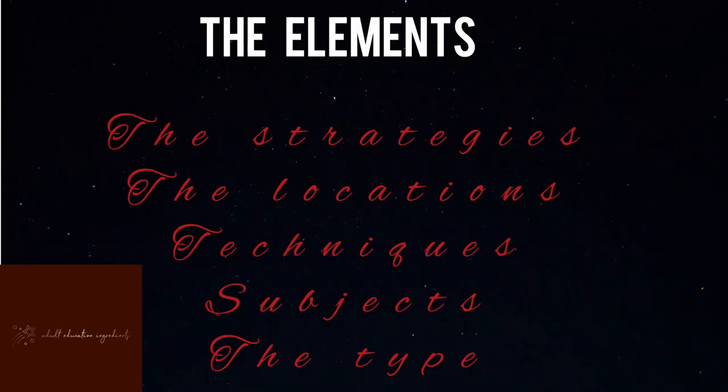The elements include strategies, location, techniques, subjects, and the type. Here, the type means the type of adult education or the characteristics of those who are participating in the education program. So we have mentioned the elements, and now we have to mention the strategies.